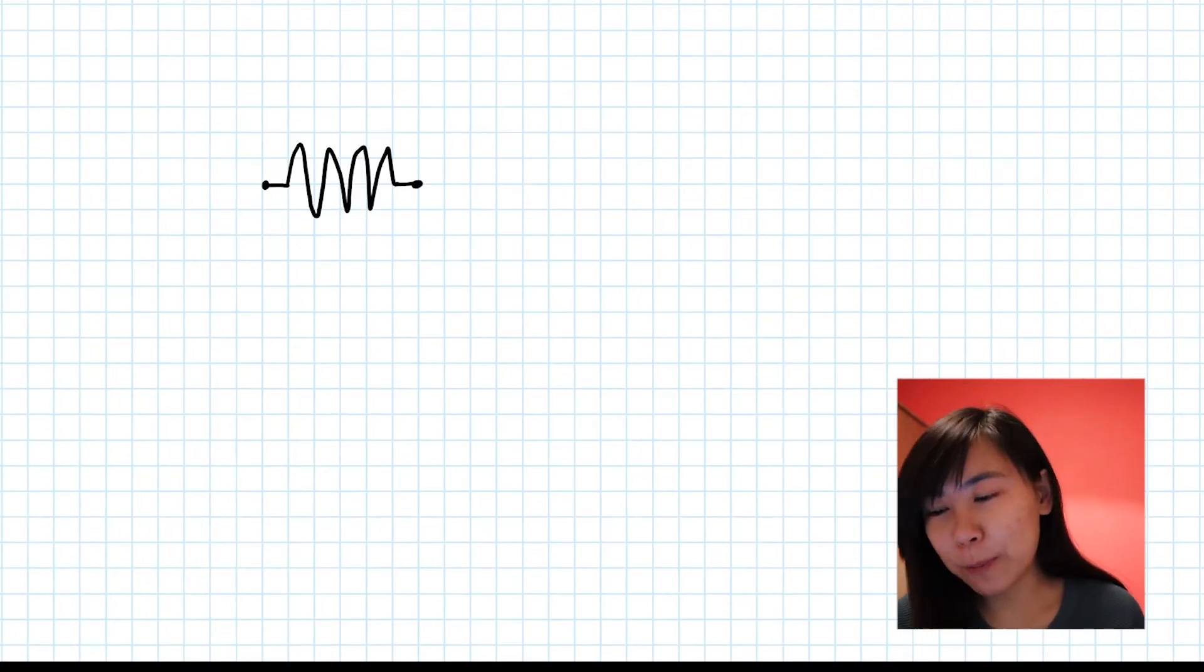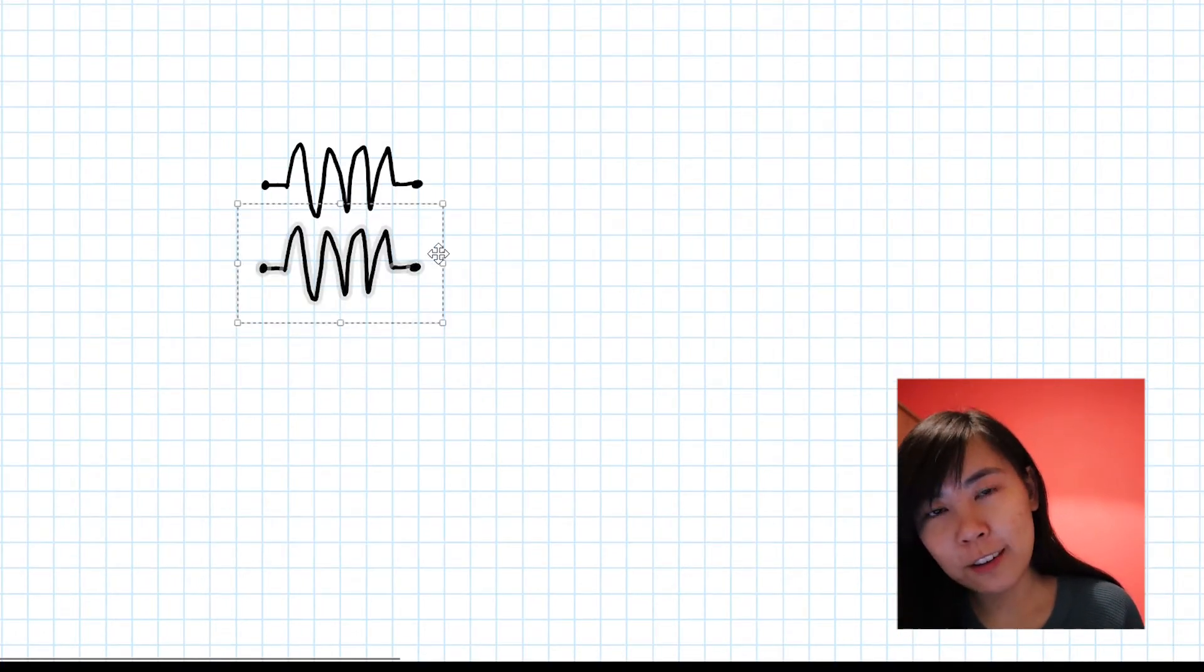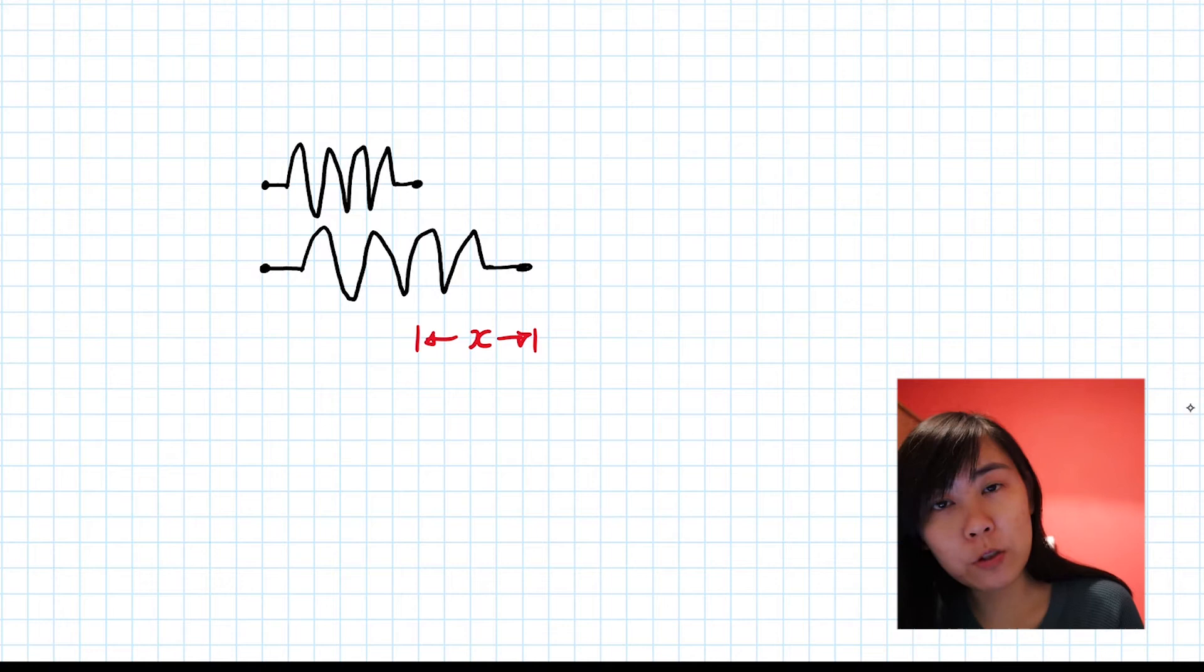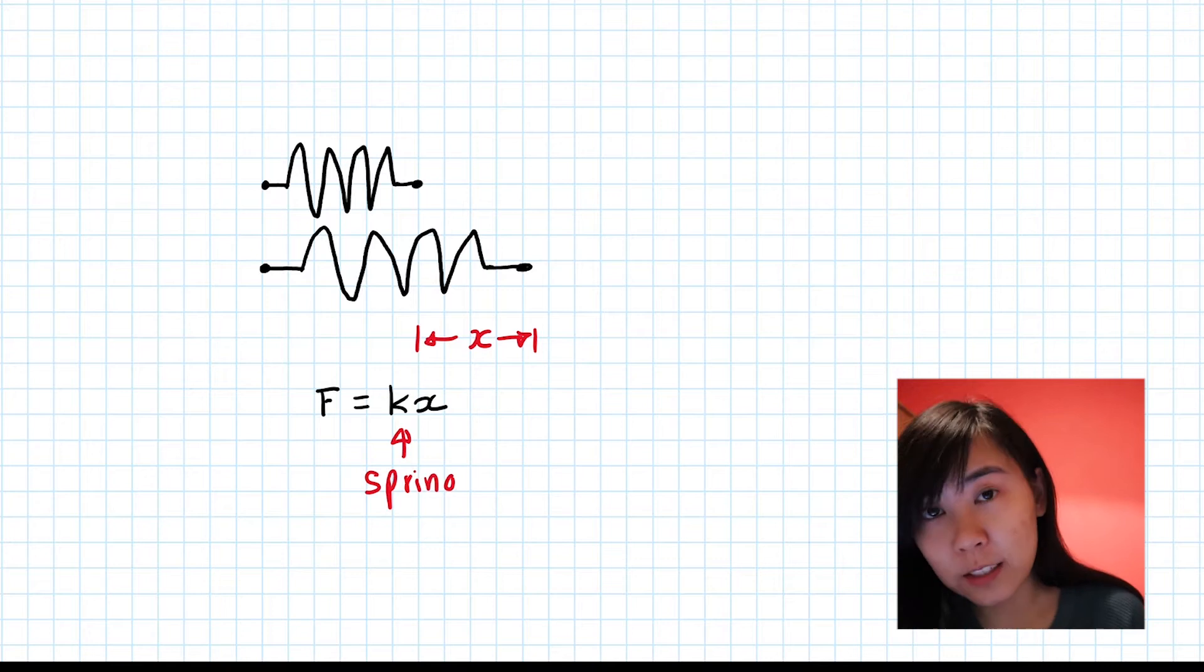If we have a steel spring and we apply a force to stretch it, then we get an extension. If this spring obeys Hooke's Law, then the extension is going to be proportional to the force stretching it. And the constant of proportionality, we call that the spring constant.